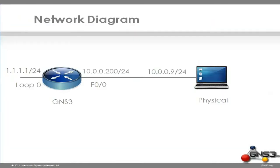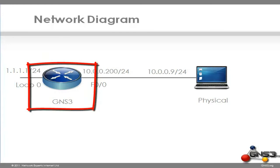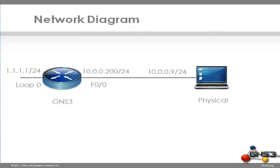We will start off with a very simple topology. We are going to configure a router in GNS3 and configure it with a loopback address of 1.1.1.1. We will configure its FastEthernet interface with an IP address of 10.0.0.200, and then configure that router to talk to the physical infrastructure using the Microsoft Loopback Adapter. So we will set up communication between GNS3 and our physical PC.